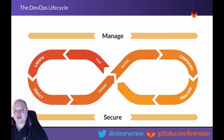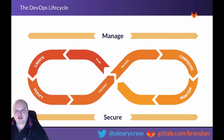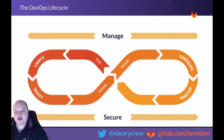This is how GitLab thinks about the DevOps lifecycle as a continuous set of stages that unite with each other and work to deploy code into production. Today we're going to focus in on the Verify portion of this graph and talk about where we're going with this stage.